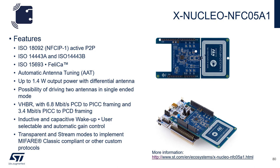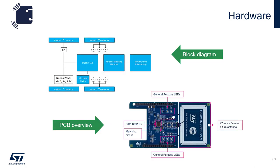The 3911B Nucleo Board has all the same features and supports all the same standards as the Discovery Board. The differences between the two boards are form factor, software, and price. The Nucleo Board features the same layout for the reader IC as the Discovery Board, has general purpose LEDs indicating the type of card being read, and a four-turn antenna that can be detached so you can evaluate your own antenna.